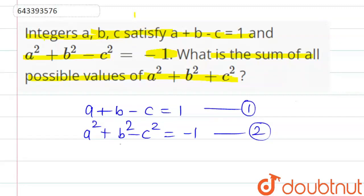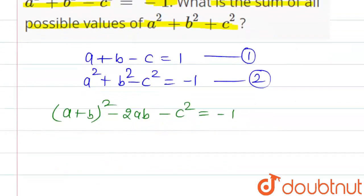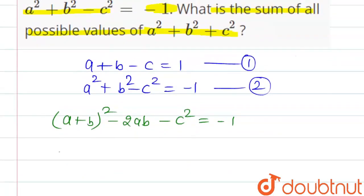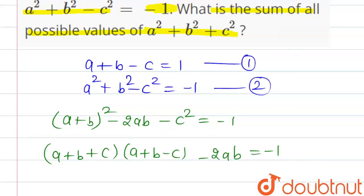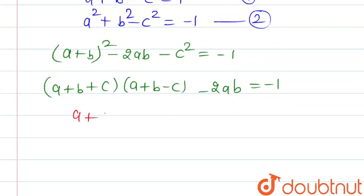To solve this, we start with the second equation: a squared plus b squared minus c squared equals minus 1. We rewrite a squared plus b squared by noting it contains an extra plus 2ab term, so we subtract it. This gives us a plus b plus c times a plus b minus c, minus 2ab, equal to minus 1.